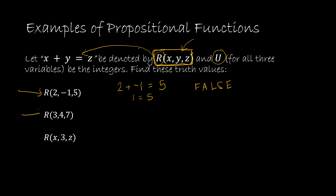Looking at the next example, r(3, 4, 7) — x, y, z have each been given a value, so this turns from a propositional function into a proposition. That gives me 3 plus 4 equals 7. Replacing x with 3, y with 4, and z with 7: 3 plus 4 is 7, and 7 equals 7 is true. So it does have a truth value, and in this case that truth value is true.